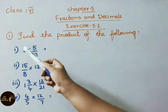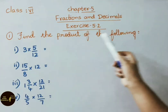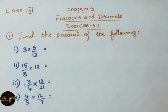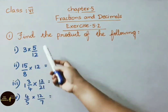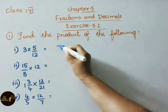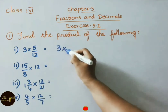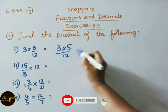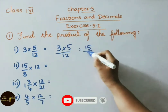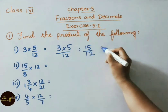In our first question, find the product of the following. The first sum is 3 into 5 by 12. We have to multiply the numerators, so write down 3 into 5 by 12. 3 fives are 15 by 12.